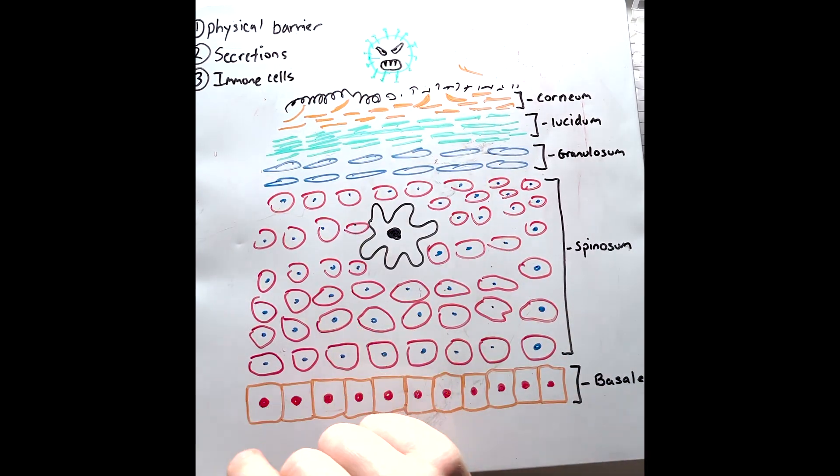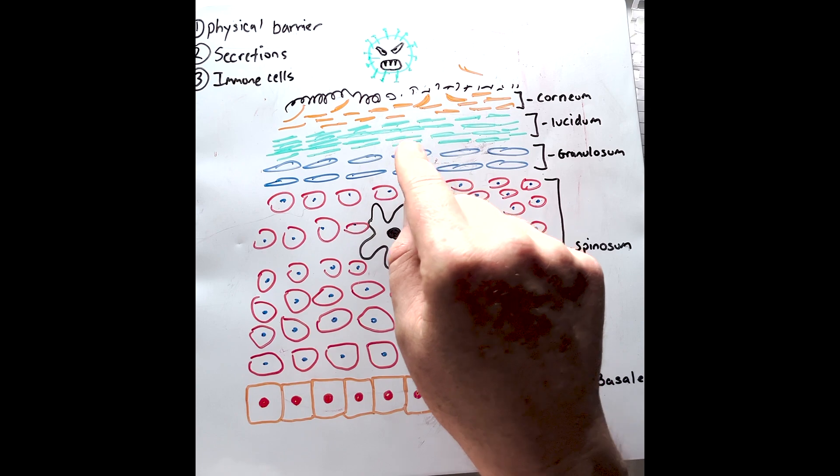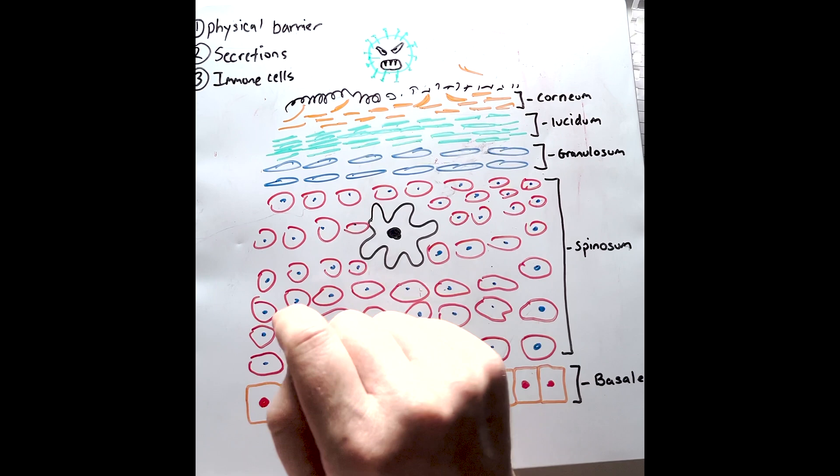Moving to function two: secretions. Dead keratinocytes secrete a natural antibiotic called defensins, which help to pierce holes within certain bacteria.